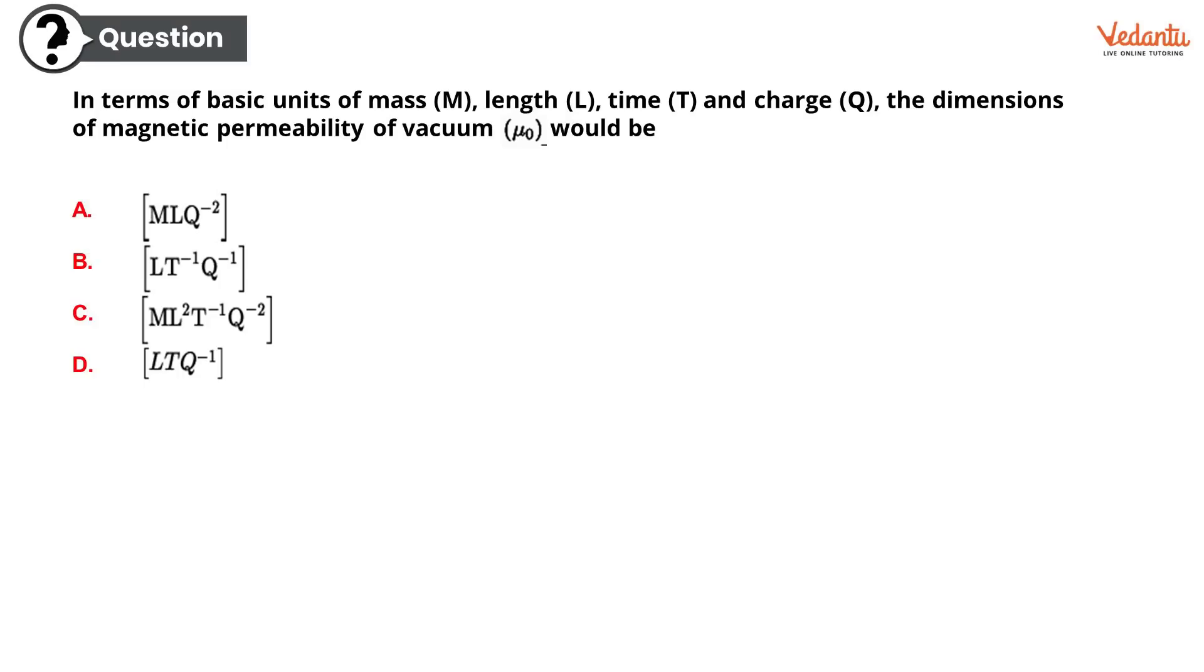I trust that every five questions that you have done till now you have got right, and hoping you'll get the other questions also right. Now, the question is: in terms of basic units of mass M, length L, time T, and charge Q, the dimensions of magnetic permeability of vacuum μ₀ would be: option A MLQ⁻², option B LT⁻¹Q⁻¹, option C ML²T⁻¹Q⁻², or option D LTQ⁻¹. Dimension analysis is always a problem. The correct option is option A, MLQ⁻². Congratulations to people who got it right. Very well done.